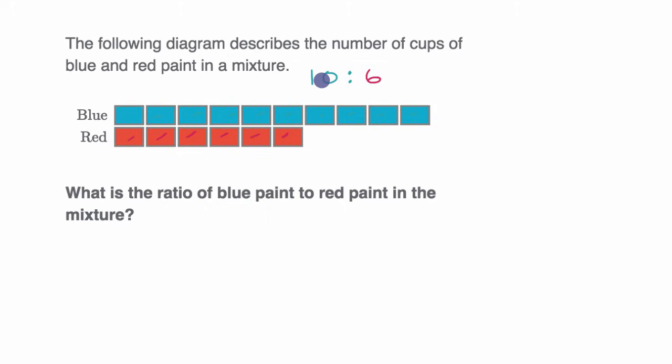But this isn't in lowest terms or most simplified terms, because we can actually divide both of these numbers by two. So if you divide ten by two, you get five, and if you divide six by two, you get three. So one way to think about it is for every five blue squares, you have three red squares in this tape diagram. Or you could say for every five cups of blue paint, you have three cups of red paint in our mixture.